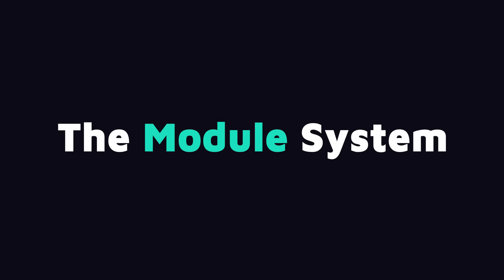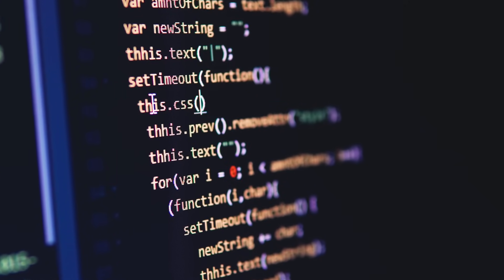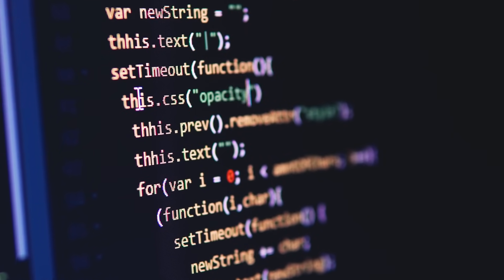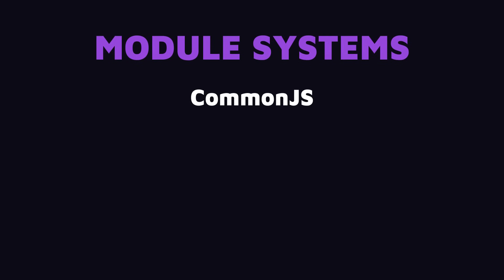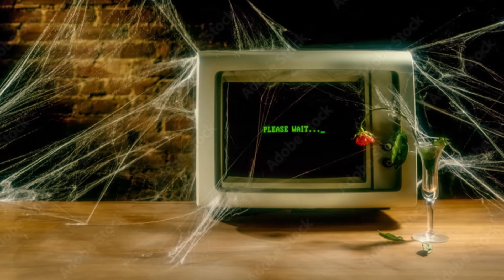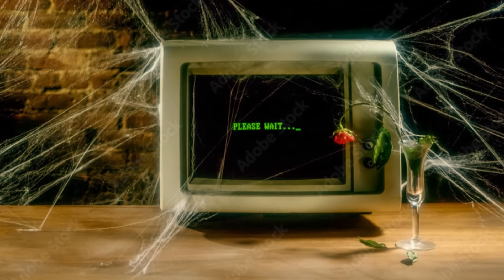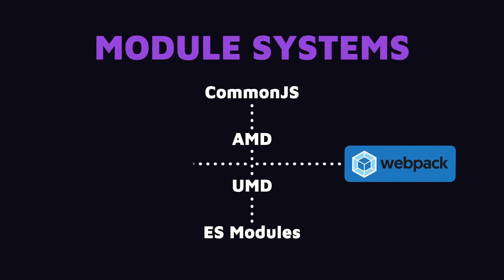The other big problem is the module system in JavaScript. JavaScript was not initially designed for large-scale applications, so it didn't have a native module system like languages like C#, Java, or Python. So over time, people came up with various module systems like CommonJS, AMD, UMD, and finally the official ECMAScript modules. The problem is each of these module systems has its own syntax and conventions, and a lot of older projects still use the older systems. This means we have to translate between module systems using tools like Webpack or Babel, which adds another layer of complexity.